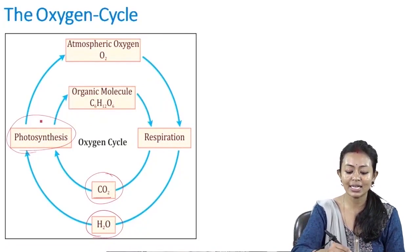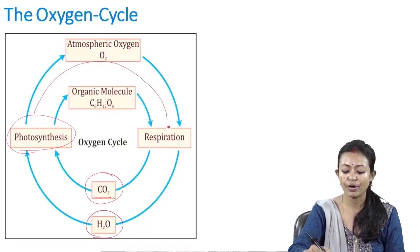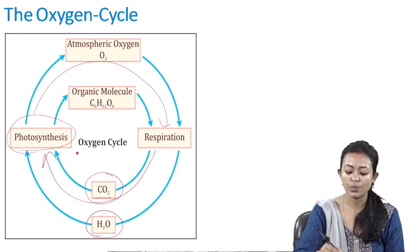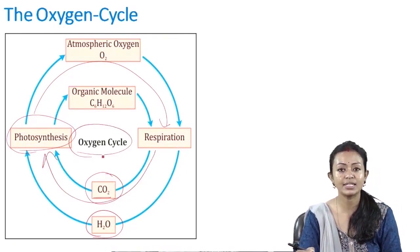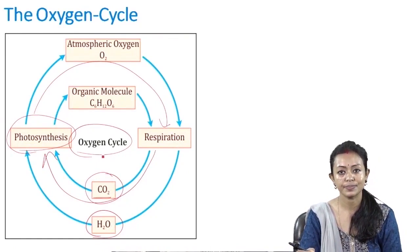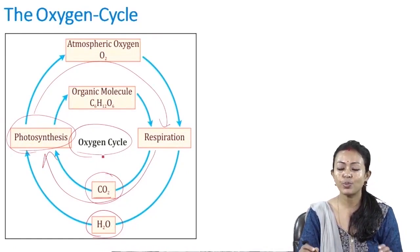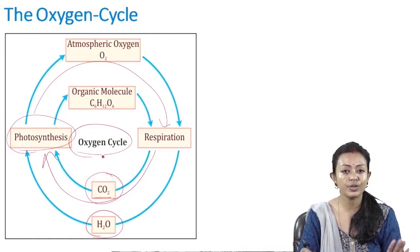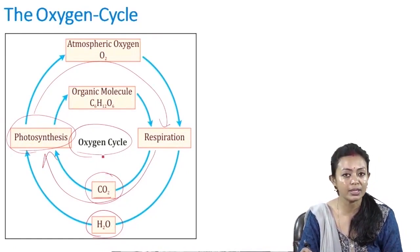This oxygen is again taken up by organisms. There is a cyclic dependency of respiration and photosynthesis which is capable of maintaining the oxygen cycle. With this, all four different biochemical cycles should be clear.